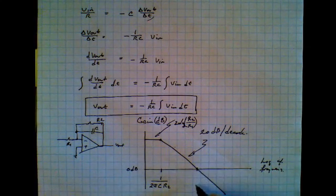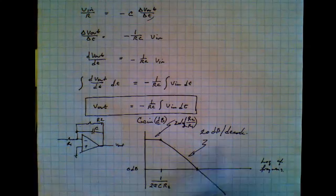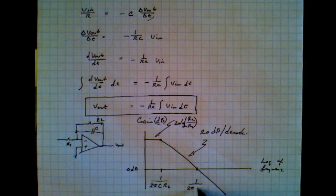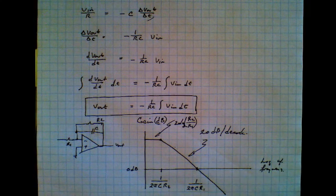This point is controlled by this resistor R1. And it is 1 over 2 pi C R1.